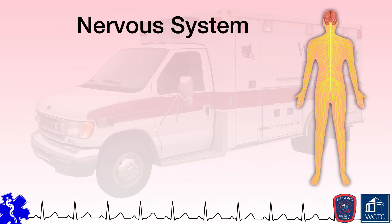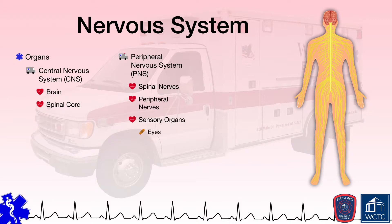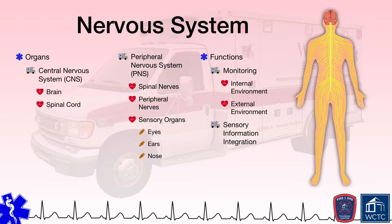The nervous system is critical for the functioning of the human body and is actually divided into two separate categories: the central nervous system, which consists of the brain and the spinal cord, and the peripheral nervous system, which includes spinal and peripheral nerves, along with sensory organs like the eyes, ears, and nose. Through a complicated system of electrical impulses and chemical exchanges, the nervous system monitors the body's internal environment as well as the external environment. The nervous system integrates all of this various sensory information and coordinates the body's voluntary and involuntary responses to maintain a state of homeostasis within the body.